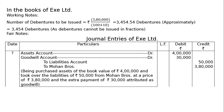The narration for the first entry: being purchased assets of the book value of Rs. 4,00,000 and took over liabilities of Rs. 50,000 from Mohan Brothers at a price of Rs. 3,80,000, and the extra payment of Rs. 30,000 attributed as goodwill.